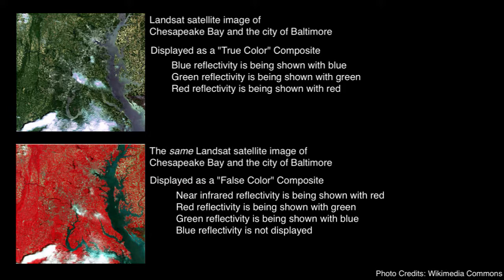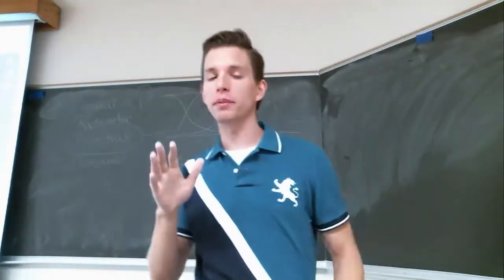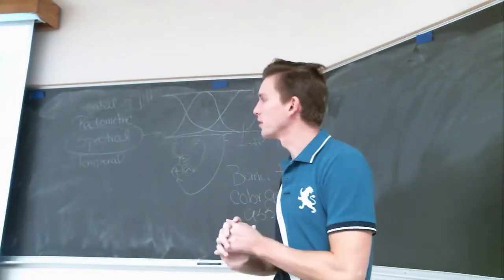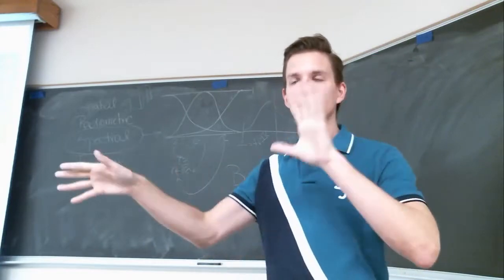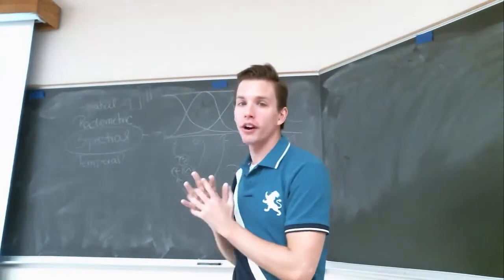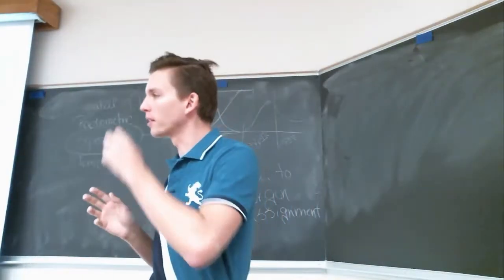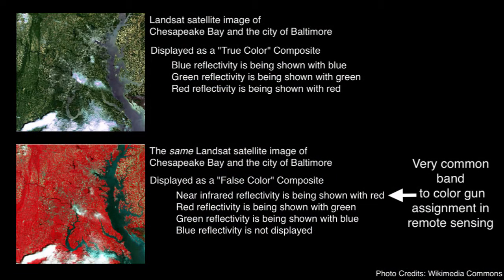When you do that, you end up with an image that looks like this. In ArcMap, you can play with this — you can tell it to take a particular spectral band and display it in green, take another and display it in blue, and mix these things together to see what type of images they produce. Anything that is not blue to blue, green to green, red to red is called a false color composite in a broad sense. But if somebody tells you to give them a false color composite, this particular band to color gun assignment is the standard one, so you know what's going on when you see it.